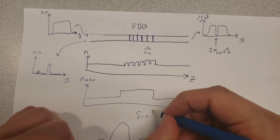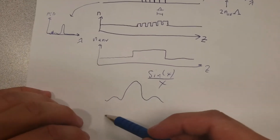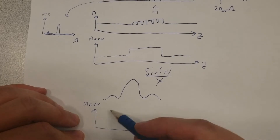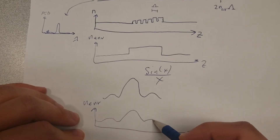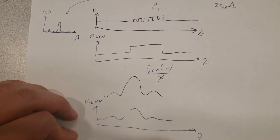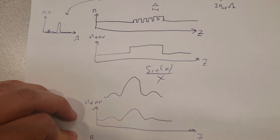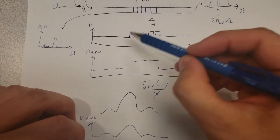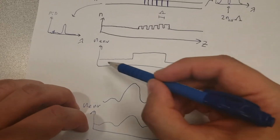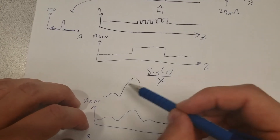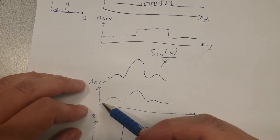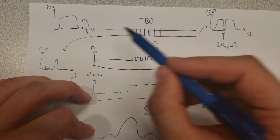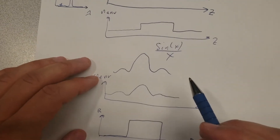Conversely, if the envelope of the change in effective index is shaped like a sinc function, then the reflection spectrum will be shaped like a square. So the envelope of the grating determines the reflection spectrum via a Fourier transform relationship. This holds as long as the grating is weak enough not to dramatically affect the transmitted power.